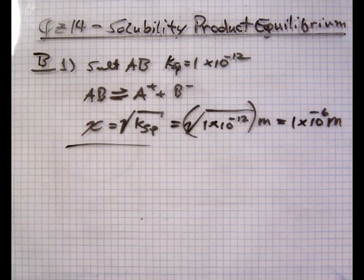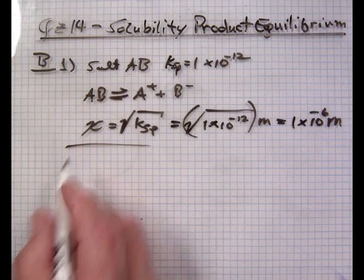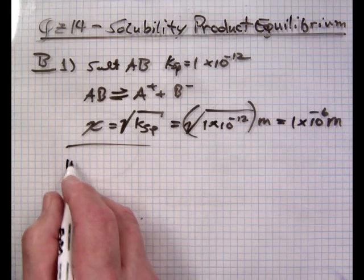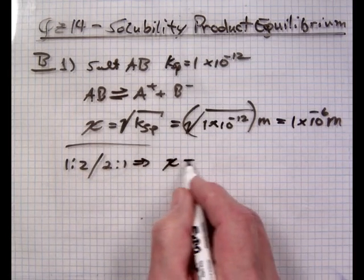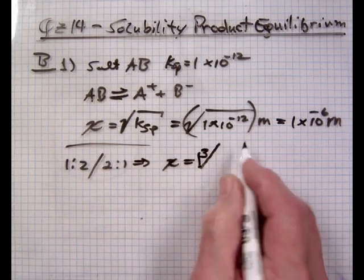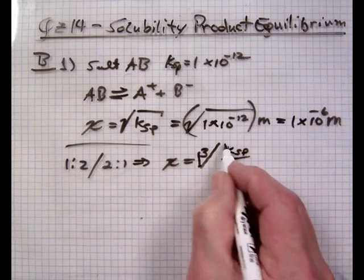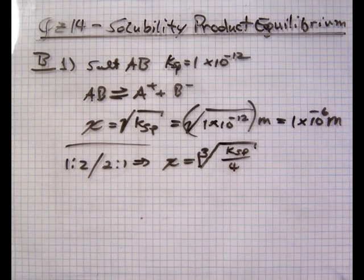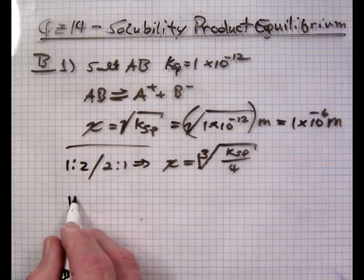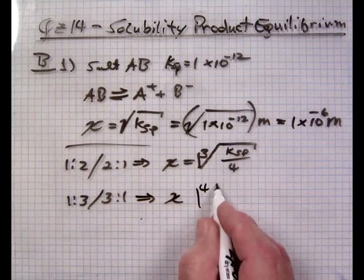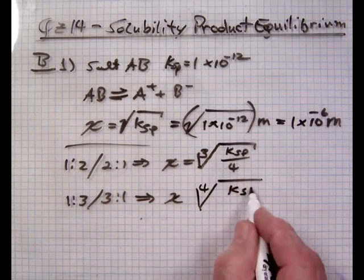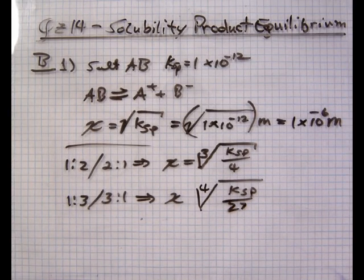This is only one of the four solubility equations. If it is a 1 to 2 or a 2 to 1 solubility then you'll have to use a cube root formula. I just put this in there for your review. Ksp over 4, so you identify the ionization ratio and then you can use the correct solubility equation. If you have a 1 to 3 or 3 to 1 ionization ratio, solubility is a fourth root of Ksp over 27.